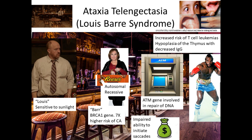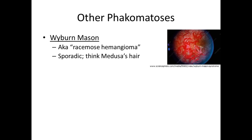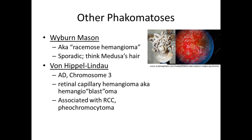The last three phacomatoses have fewer things to remember. First is Wyburn-Mason, also known as racemose hemangioma or Bonnet-Dechaume-Blanc. It is sporadic like Sturge-Weber — with Wyburn-Mason, just think of Medusa's hair; nothing else looks like it. There's also von Hippel-Lindau disease, which is autosomal dominant on chromosome 3 — like three words in von Hippel-Lindau.